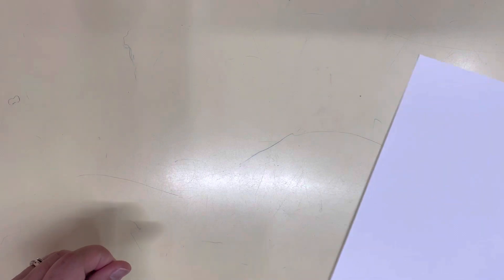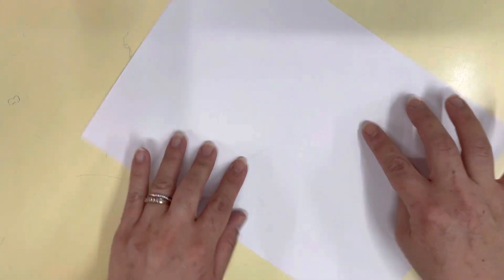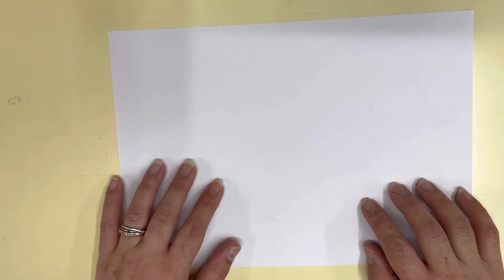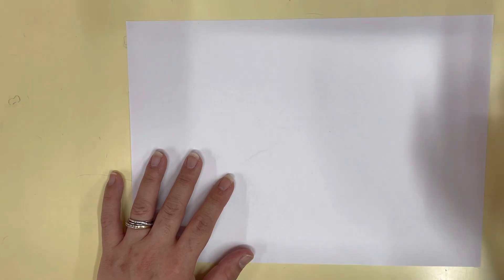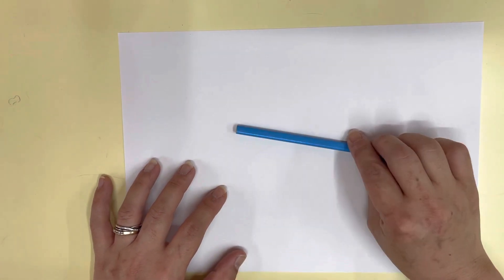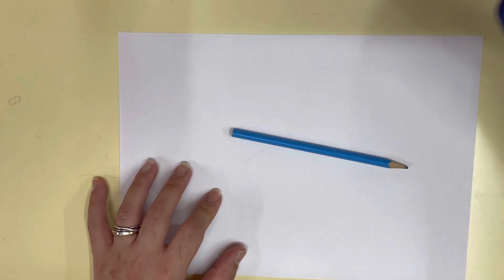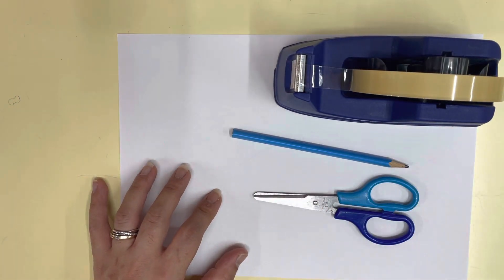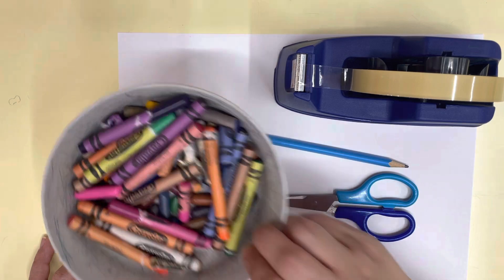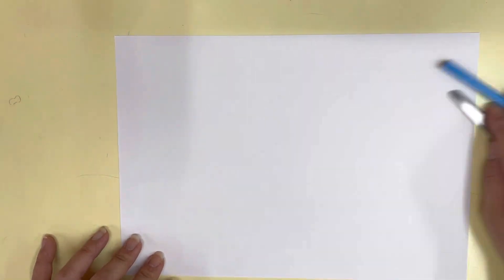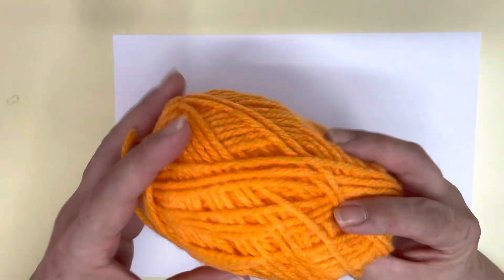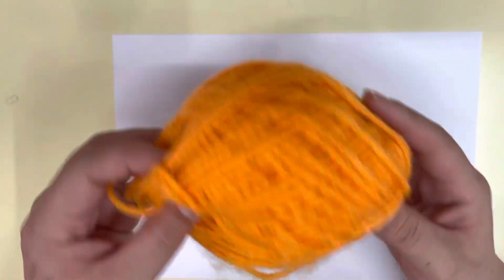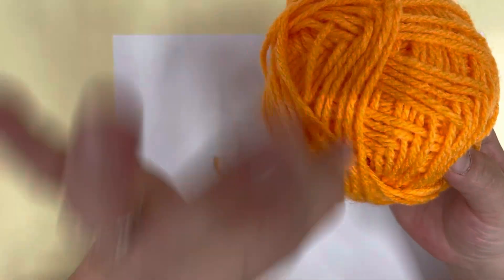So we're going to make our portrait but with a surprise at the end. Okay, so number one, you need paper, pencil, tape, scissors, and crayons. And the special thing at the end, you're going to need some string. Any color is okay.